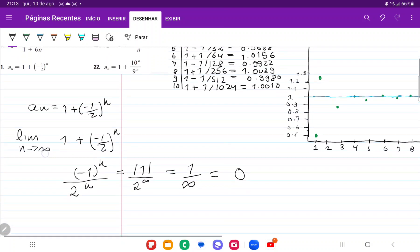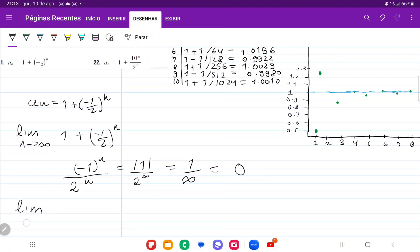So we're going to have here that this limit, so the limit as n approaches infinity of 1 plus negative 1 half to the power of n is equal to 1 plus this guy goes to 0. So 1 plus 0 is equal to 1. So we've gone ahead and we've proved that.